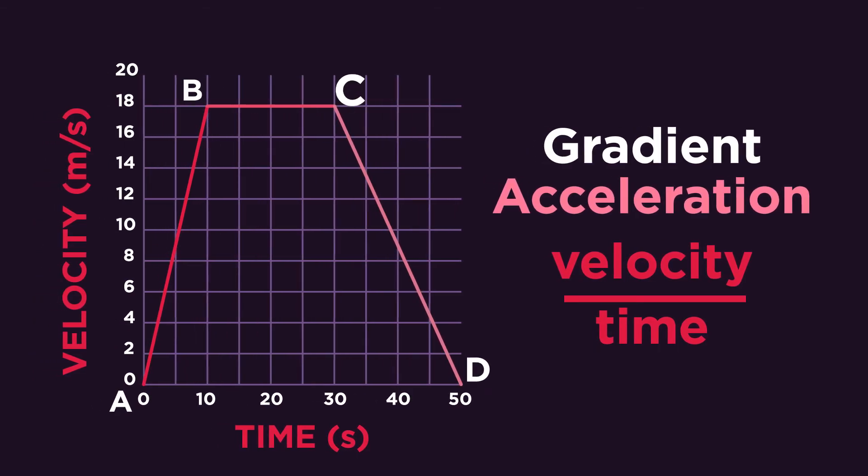The acceleration between C and D is found using the gradient. The change in velocity is again 18 meters per second, but because it's a decrease we must use negative 18 meters per second. This occurs over 20 seconds.